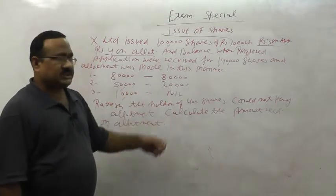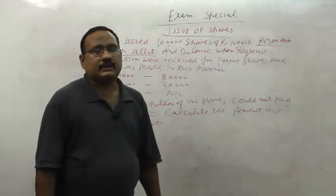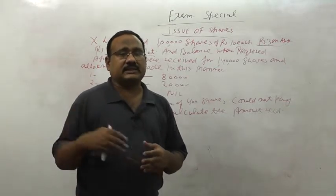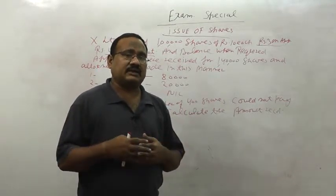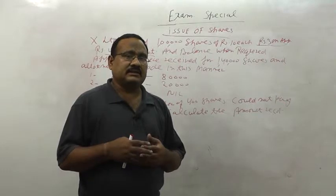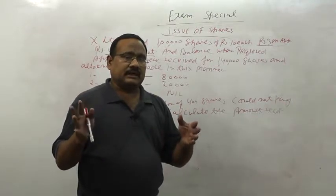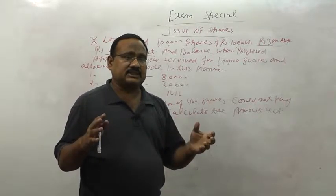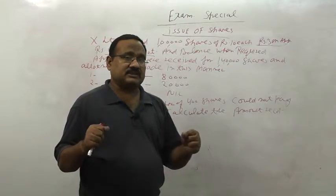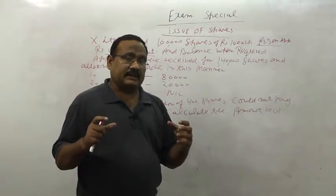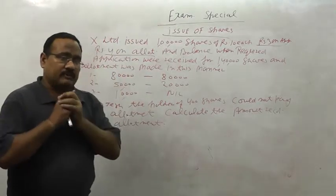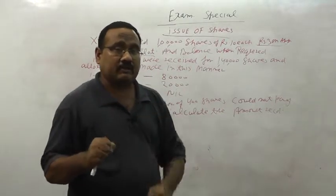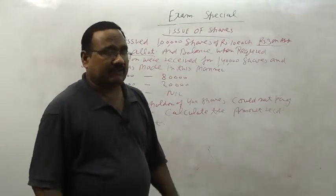10,000 shares were allotted nil — out of 1 lakh 40,000 applications, 10,000 were rejected. The balance applications of 1 lakh 30,000 remain. The excess application money on those 30,000 extra shares amounts to 90,000. One important thing to keep in mind is how to calculate the amount received on allotment very quickly.